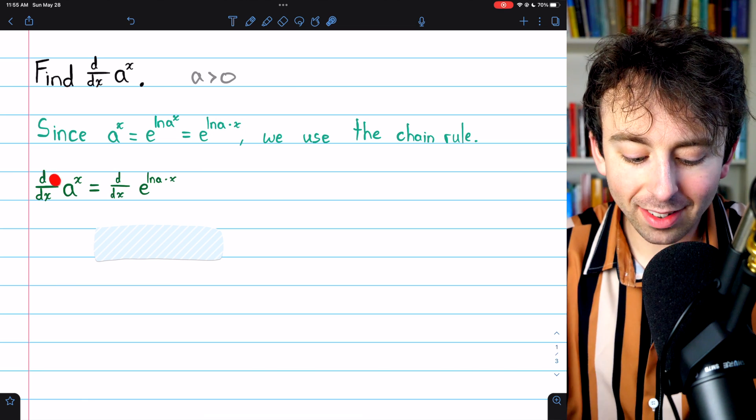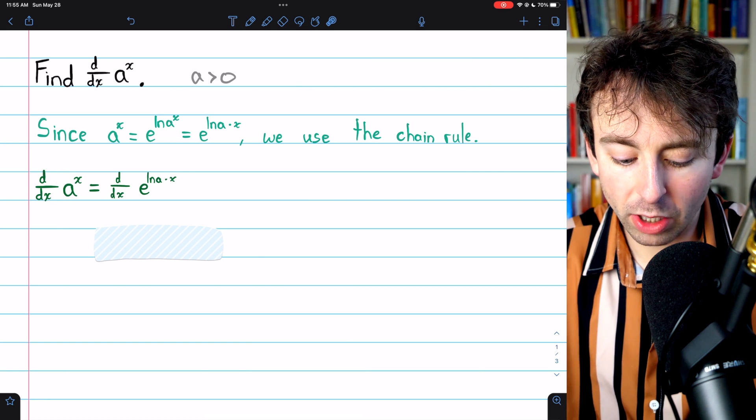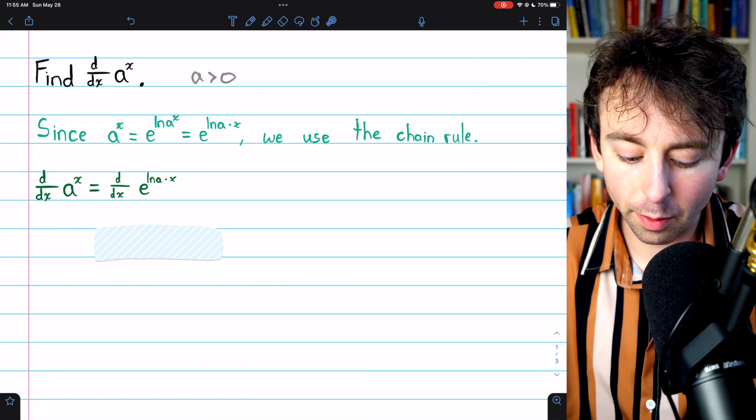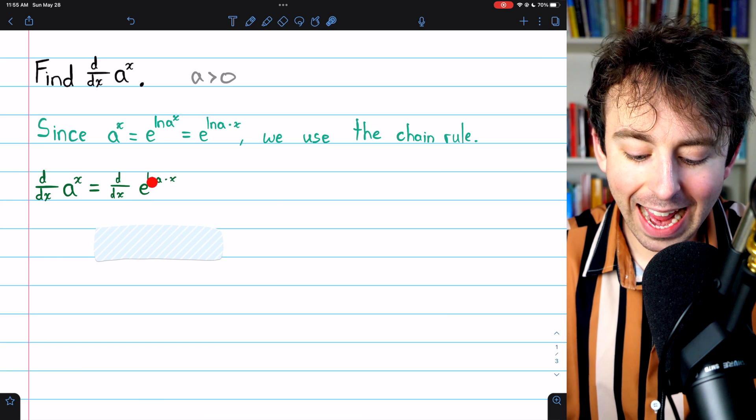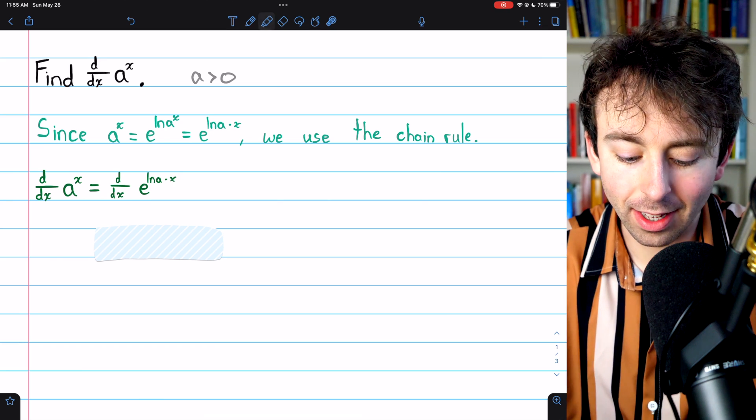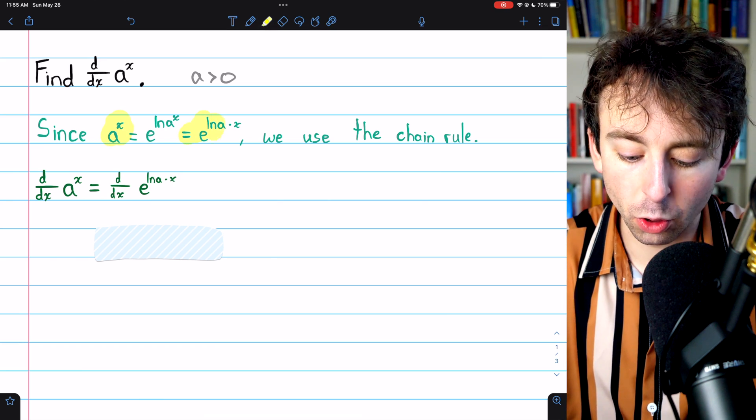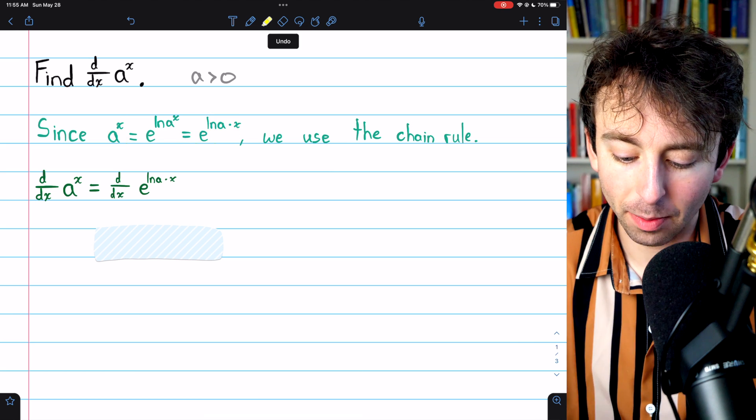All right. So let's take the derivative of a to the x, which we see is the same as taking the derivative of e to the ln a times x, since a to the x is equal to e to the ln a times x.